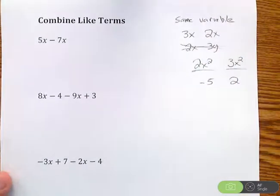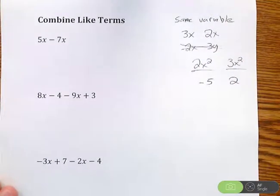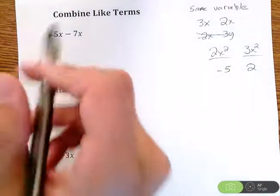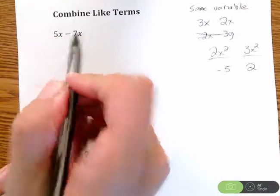As always with combining like terms, if you have just regular old integers like negative 5 and 2, we could still combine stuff like that as well. So let's jump right into it.